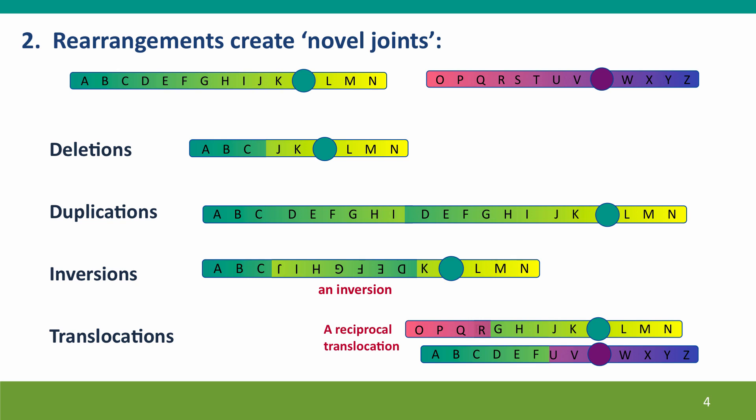The second topic is the consequences of the novel joints that rearrangements create. Whenever DNA sequences are broken and then rejoined to new partners, the place at which that joining happens puts together sequences that are not normally together — these are called novel joints. For example, here's a deletion chromosome where the segment from D to I has been removed. The consequence is that sequences at C are now right up against sequences from J, which they weren't before. This is a novel joint.